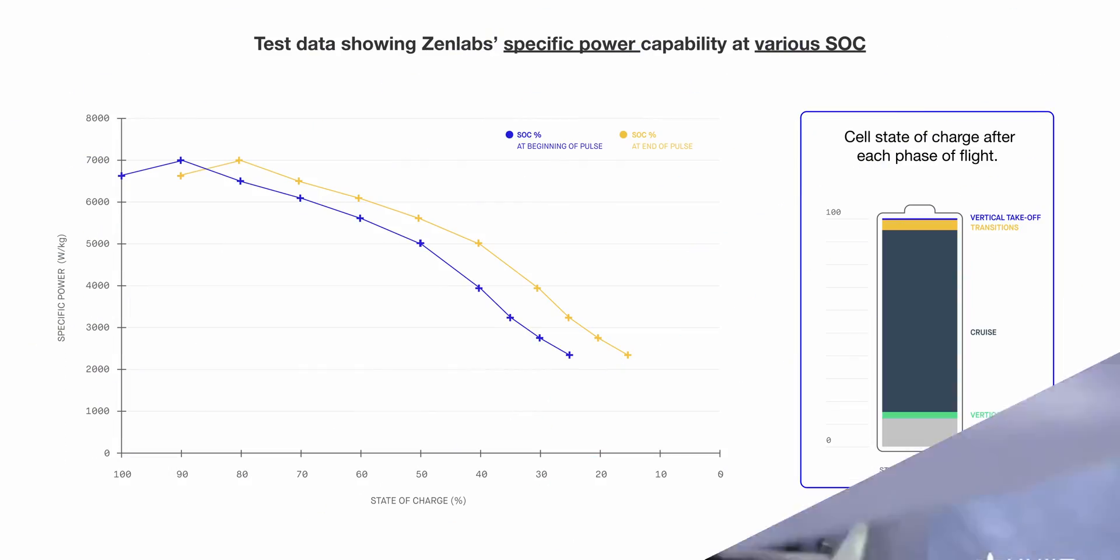The cell is able to support the stated power during the entire discharge at each tested state of charge. They demonstrated that the Zenlabs cell can maintain a high specific power of 2,500 watts per kilogram even down to 20% state of charge.